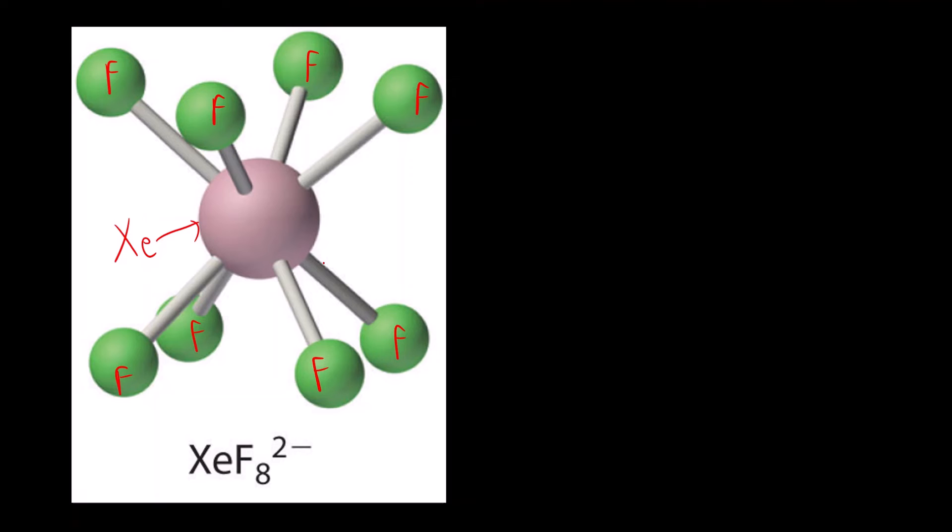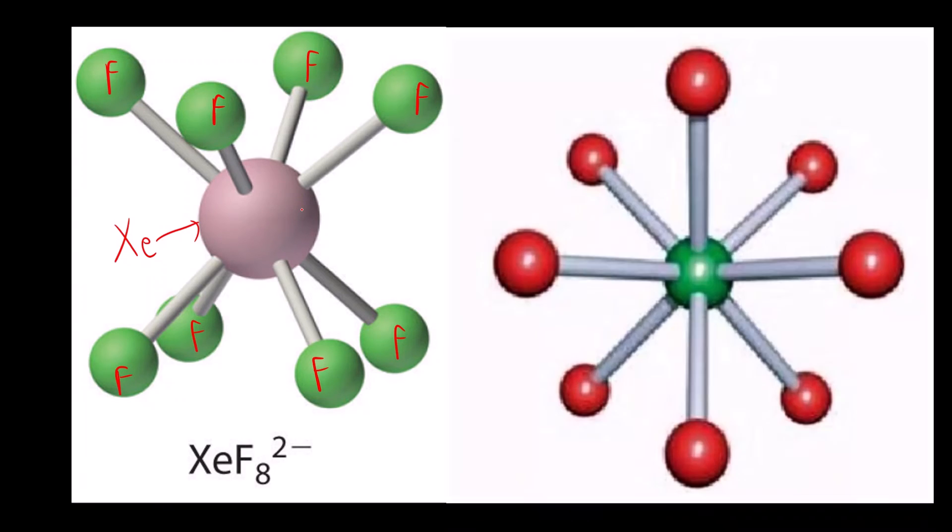Now you might say that this looks like a cubic structure, but it is not cubic. If we see from the top, you can see that the four fluorine atoms are in between the other four fluorine atoms.